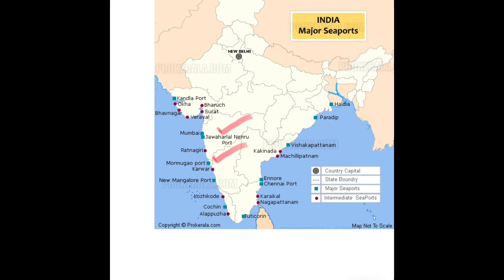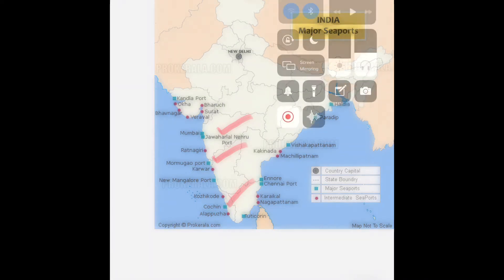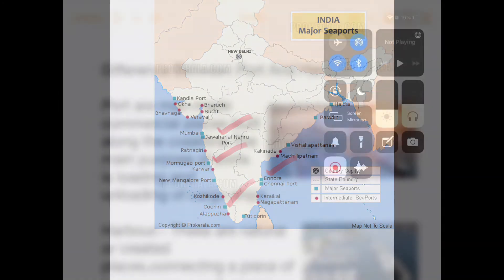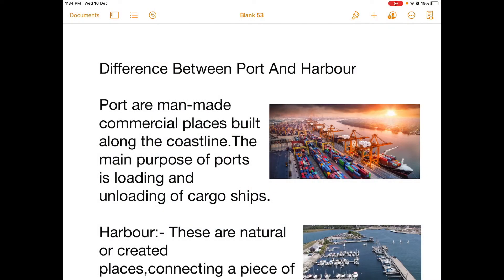Marmugao port in Goa is a natural harbour situated at the entrance of the Zuari river. Kochi in Kerala is a natural harbour that handles the export of tea, coffee, and spices, and imports of petroleum, oil, and fertilisers. Ennore port in Chennai is located 24 km north of Chennai port and is the first port in India under a public company.